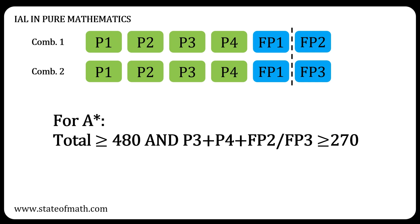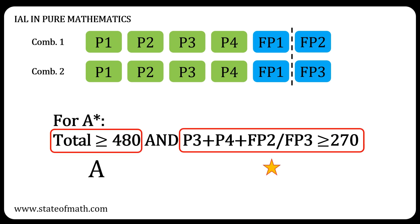For an IAL in pure mathematics, the total UMS must be at least 480, and the total of the P3, P4, and either FP2 or FP3 must be at least 270. Again, you can think of this as two conditions: one for the A and one for the star. This is straightforward, so I will skip going over an example.